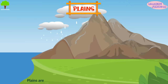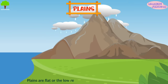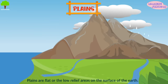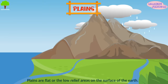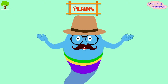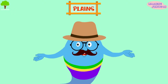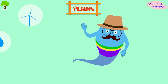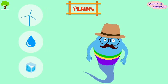Plains. Plains are flat or low relief areas on the surface of the earth. They might be formed as a result of the sedimentation of eroded soil from the top of hills and mountains, or due to flowing lava deposited by the agents of wind, water, and ice.